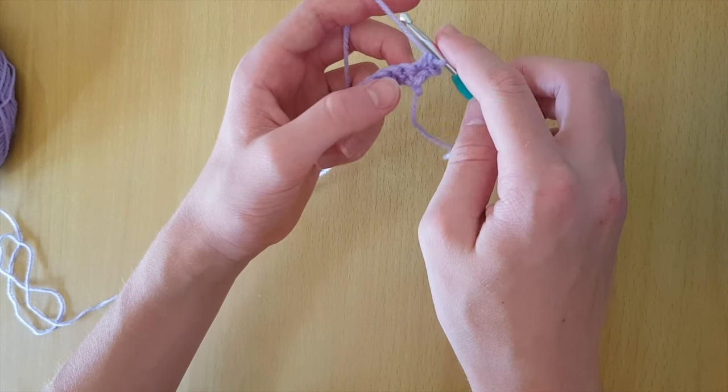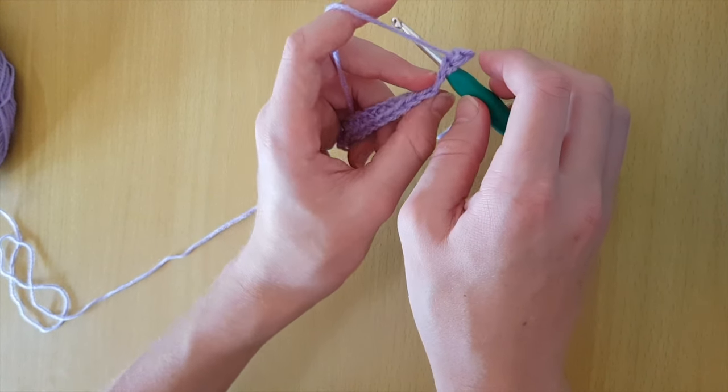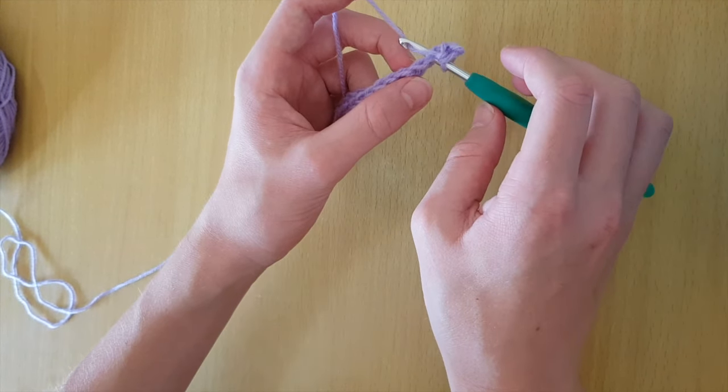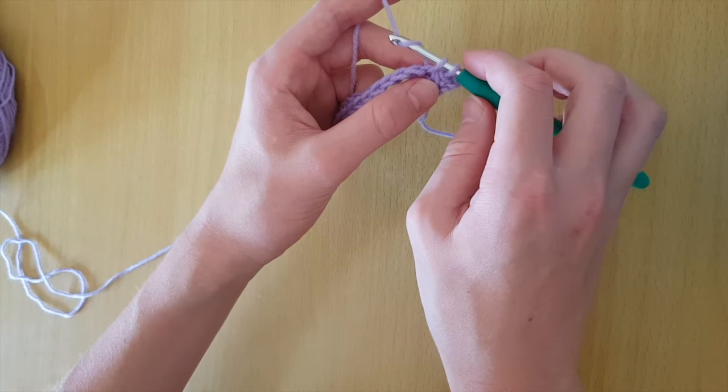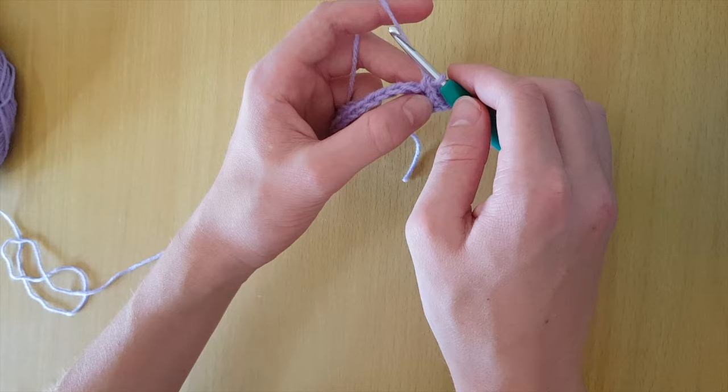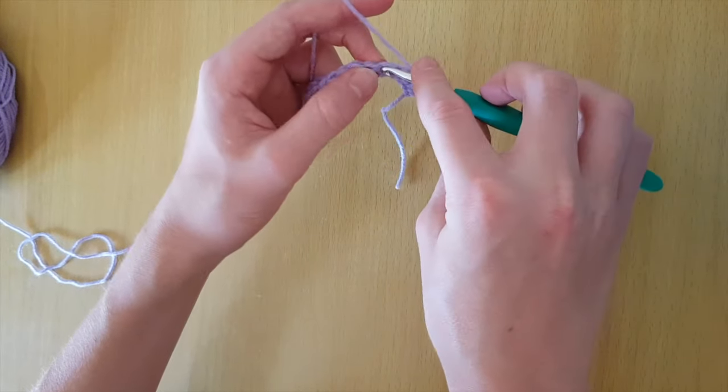Insert your hook into the next stitch, both loops. Wrap around, pull up, wrap around and pull through the 2 stitches on your hook. Now continue this all the way across the rest of the row and I will meet back up with you.